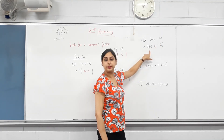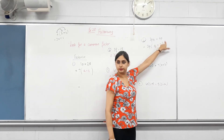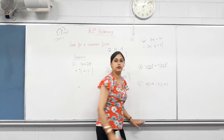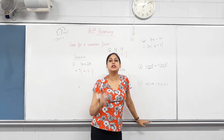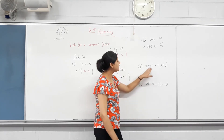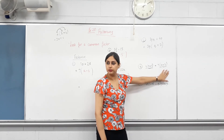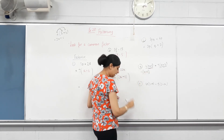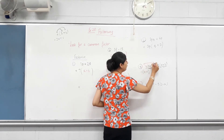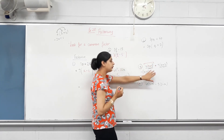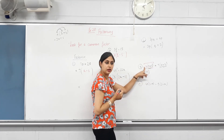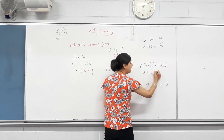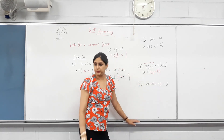This one has a common factor that is a binomial — meaning it has two terms in it. We can see the whole bracket (x + 3) is common to both terms. So we can take the whole (x + 3) bracket out. From the first term, y times (x + 3): taking (x + 3) out leaves y. From the second term, 7 times (x + 3): taking (x + 3) out leaves 7. So the answer is (x + 3)(y + 7).